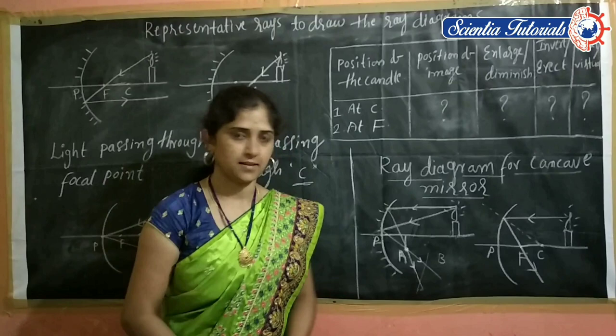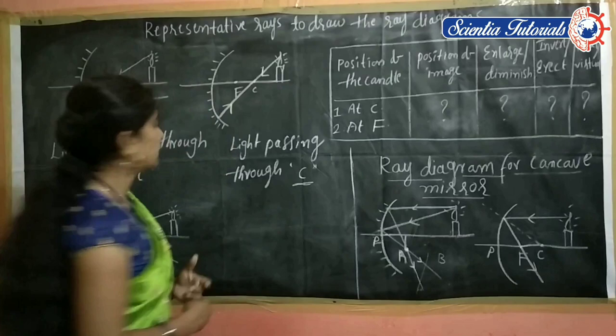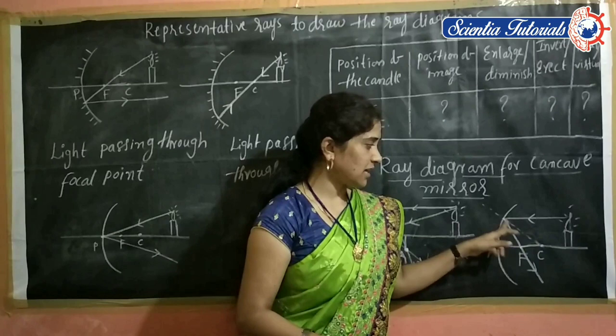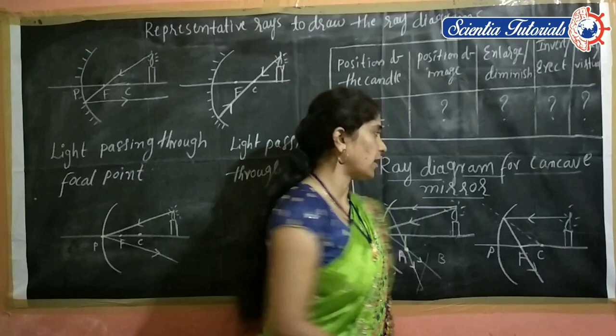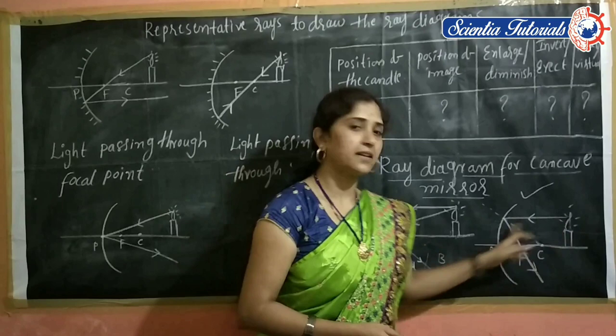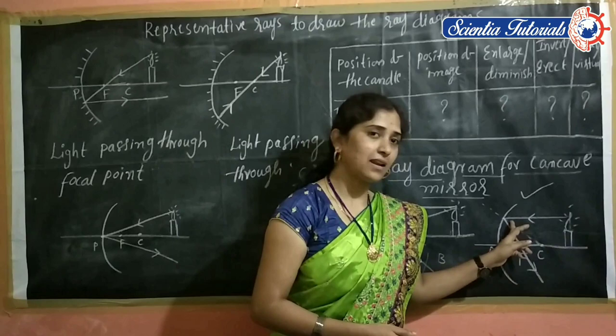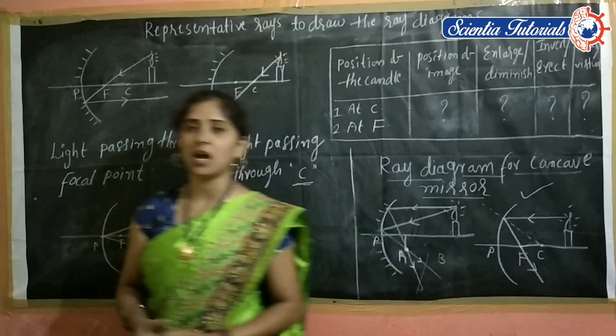When the light ray is parallel to the principal axis and falls on the concave mirror, it reflects through the focus. This is one of the conditions that reflected or incident rays follow. When the light ray falls parallel to the principal axis on the concave mirror, that light ray reflects through the focus. Let me discuss details about this ray diagram.